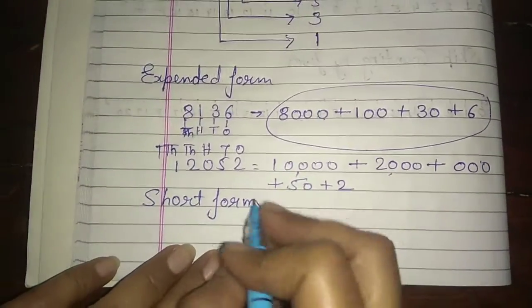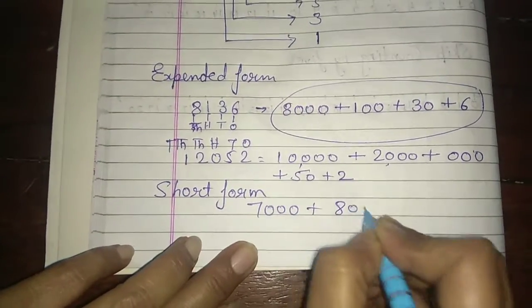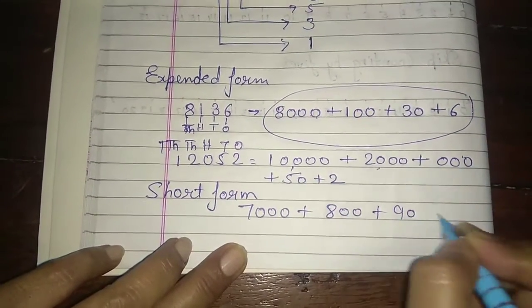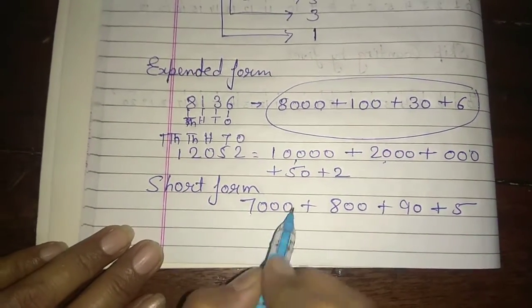this is the short form. For example, this is seven thousand, eight hundred, ninety, and five. First of all, you see the largest number. Largest number is seven thousand.